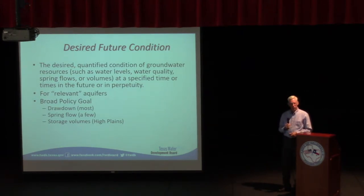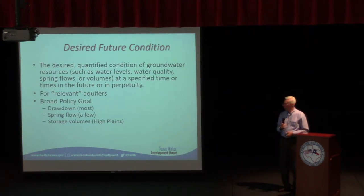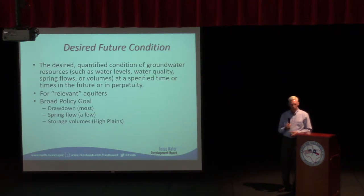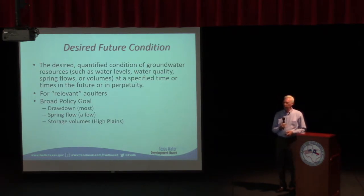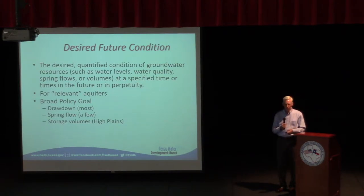In some areas, like in the Hill Country, desired future conditions may be expressed as a spring flow — for example, wanting a spring to flow at a certain cubic feet per second under certain drought conditions. In areas like the Ogallala, storage volume has been a common way to express a desired future condition — for instance, a GMA may express its DFC as wanting a certain percentage of groundwater remaining in the aquifer over a certain time period. Typically we use about a 50-year horizon, which provides a basis for future planning.